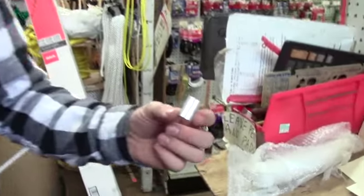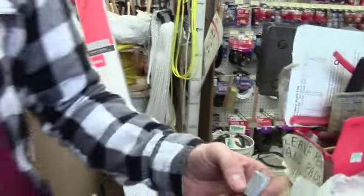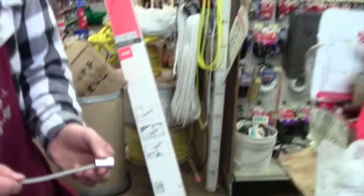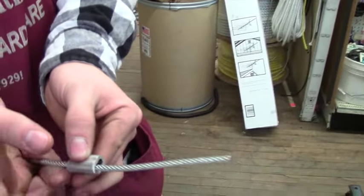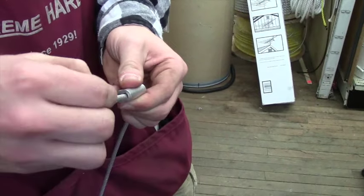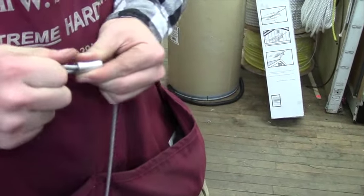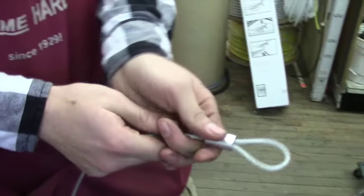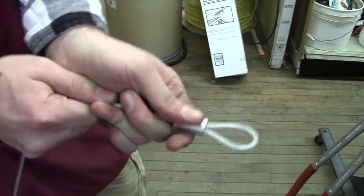Next, we need a crimp. We're going to put one end of the cable through the crimp. We're going to loop that around and put it through the other end. Make a nice tight loop with that.